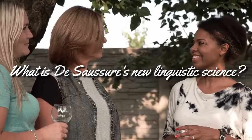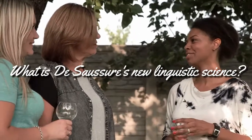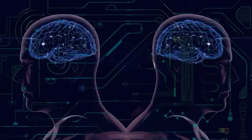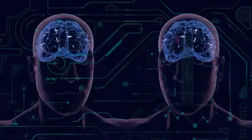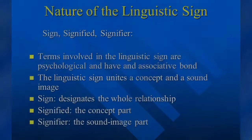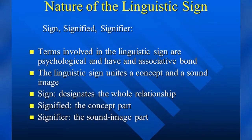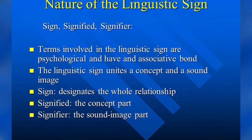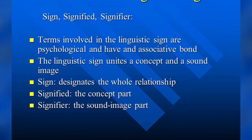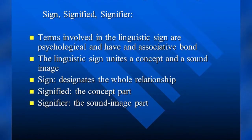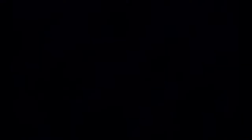What is de Saussure's new linguistic science? De Saussure called his new linguistic science semiology, a term derived from the Greek word for sign, semeion. Semiology, also called semiotics, is the study of the structure of language as a system. De Saussure's semiology is about sign, signifier, and signified.